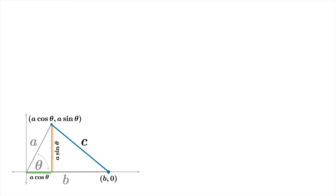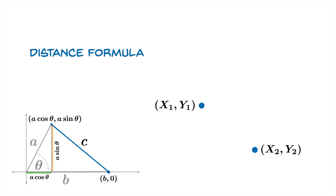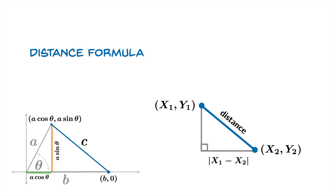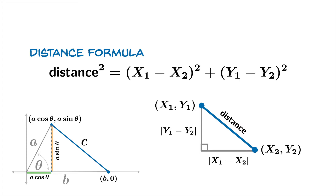What we'll do now is recall the distance formula. If you have points (x1, y1) and (x2, y2) and you want to calculate the distance between them, you can imagine a little right triangle. One side is the absolute value of x1 minus x2, and similarly the other side is the absolute value of y1 minus y2. We take the sum of the squares to get the distance squared — this is really just the Pythagorean theorem. The distance formula is a thinly disguised version of the Pythagorean theorem.